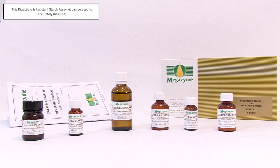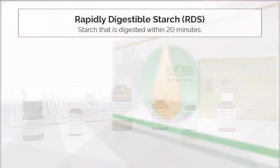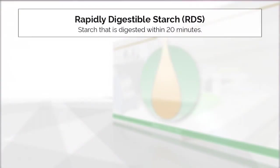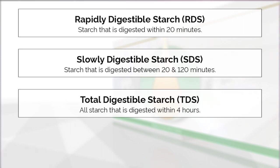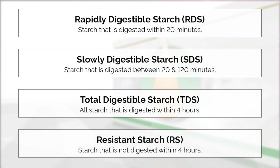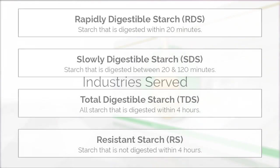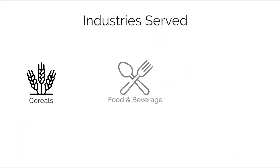This digestible starch and resistant starch assay kit can be used to accurately measure rapidly digestible starch (RDS), which is starch digested within 20 minutes; slowly digestible starch (SDS), digested between 20 and 120 minutes; total digestible starch (TDS), all starch digested within four hours; and resistant starch (RS), which is starch not digested within four hours.